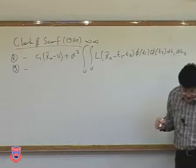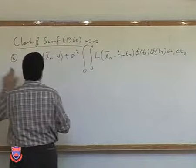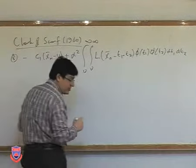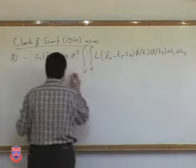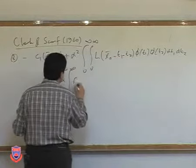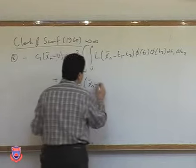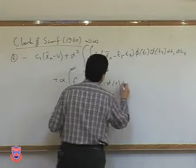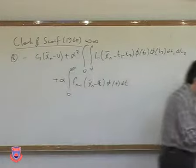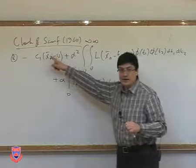And then we have another term, plus alpha, which combines the future effects. That is going to be f_{n−1}(x_n_bar − t) · φ(t) dt. So this is the cost if we can achieve x_n_bar.